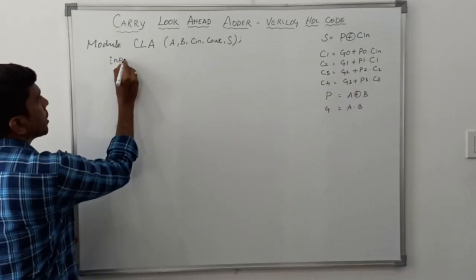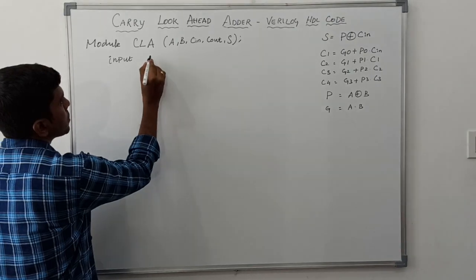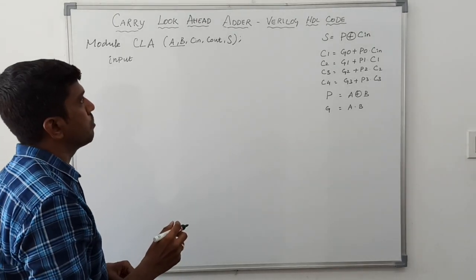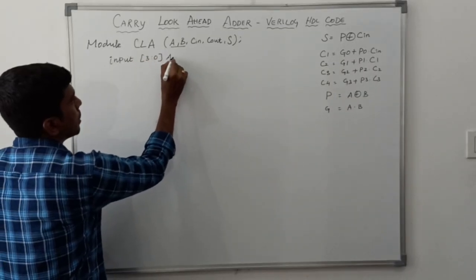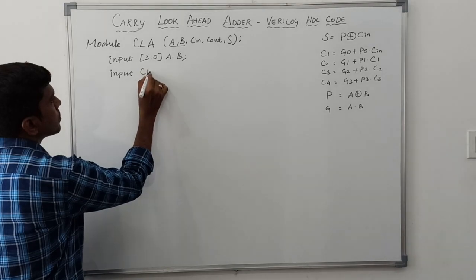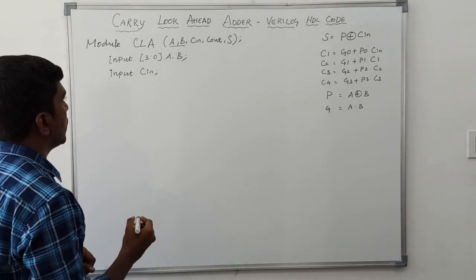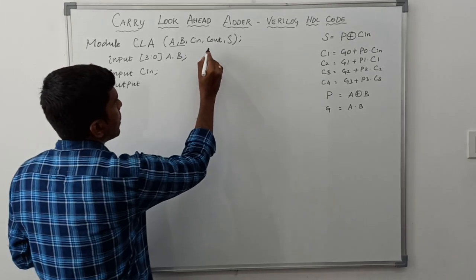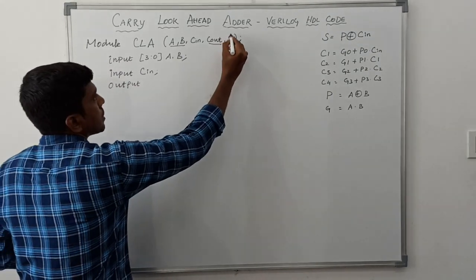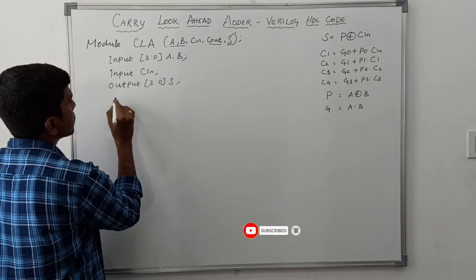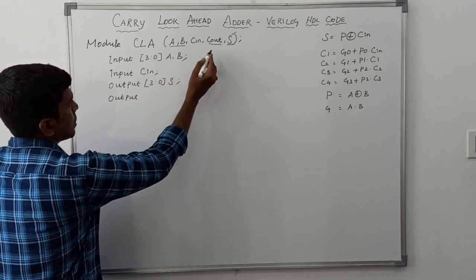The input variables: A and B are declared in vector form because it is a 4-bit carry lookahead adder, so input [3:0] A, B. Another input is CIN, which is a single-bit value. The output variables are COUT and SUM. SUM is a vector, output [3:0] S. Another output is COUT.